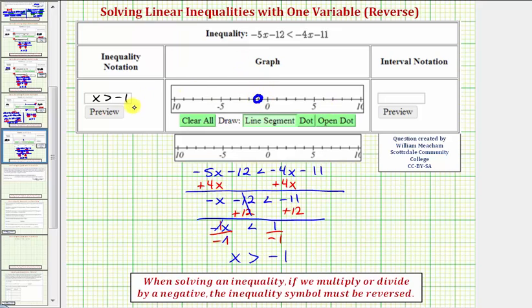If the interval did include negative 1, we'd use a closed point or closed dot. And now because x is greater than negative 1, we graph to the right using the line segment tool. So this is one way to graph our solution.